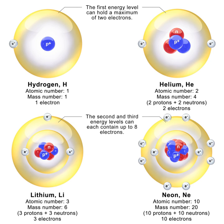The neutron is a subatomic particle, symbol n or n0, with no net electric charge and a mass slightly larger than that of a proton. Protons and neutrons constitute the nuclei of atoms. Since protons and neutrons behave similarly within the nucleus, and each has a mass of approximately one atomic mass unit, they are both referred to as nucleons.